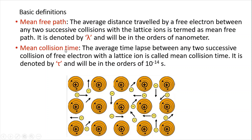Now, mean collision time: the average time lapse between any two successive collisions of free electrons with the lattice ion is called mean collision time. It is denoted by tau and will be in the order of 10 to the power of minus 14 seconds. Between any two successive collisions, there is a time gap, and when you take the average of such time gaps, it gives the mean collision time.